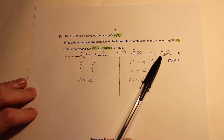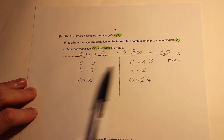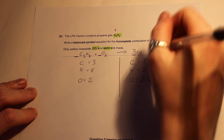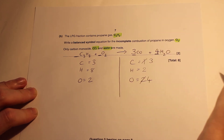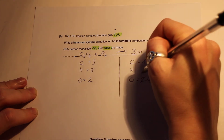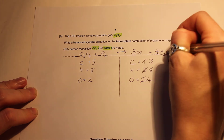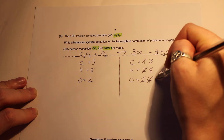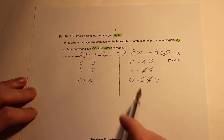Next, look at hydrogen. On the right we have two, on the left we have eight. So put a 4 in front of H2O. Four times two gives us eight hydrogens. Four times one is four, and four plus three gives us seven oxygens on the right.